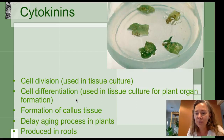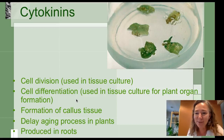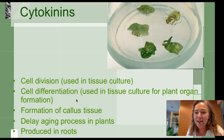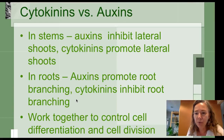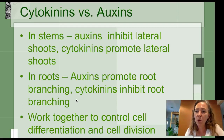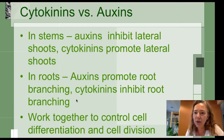We don't see cytokinins as much outside of micropropagation, but I'm starting to see them in facial creams and wrinkle creams because this plant hormone is associated with cell growth. So comparing cytokinins to auxins: if you remove the auxin from the top, the cytokinins kick in to promote lateral growth, whereas the auxins typically inhibit the cytokinins, instead causing apical dominance — for that plant to go straight up.